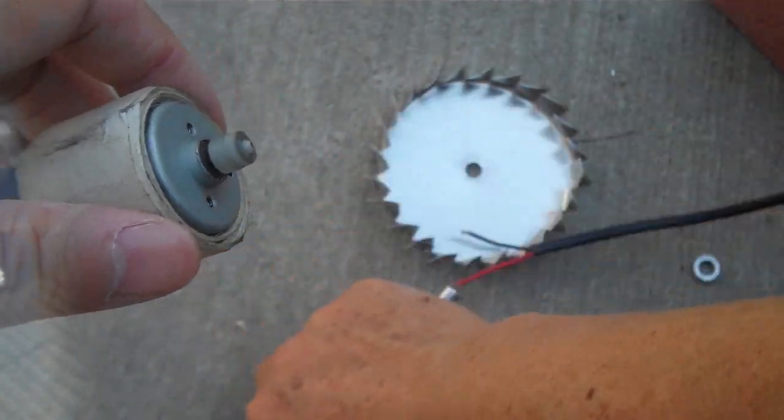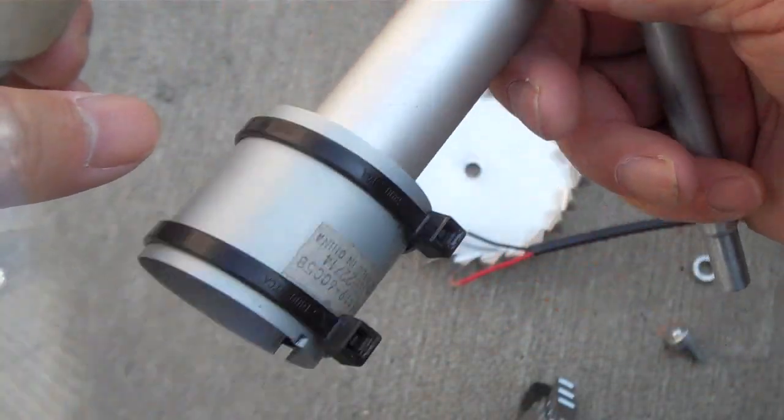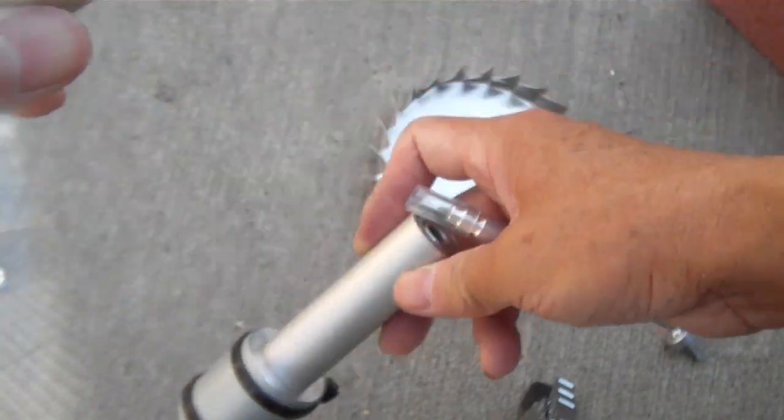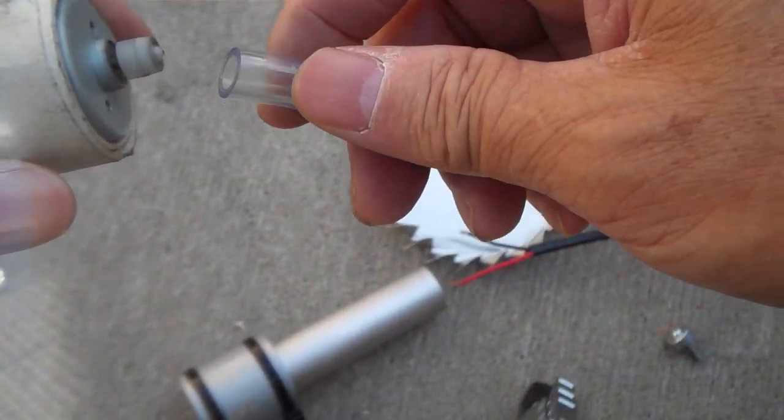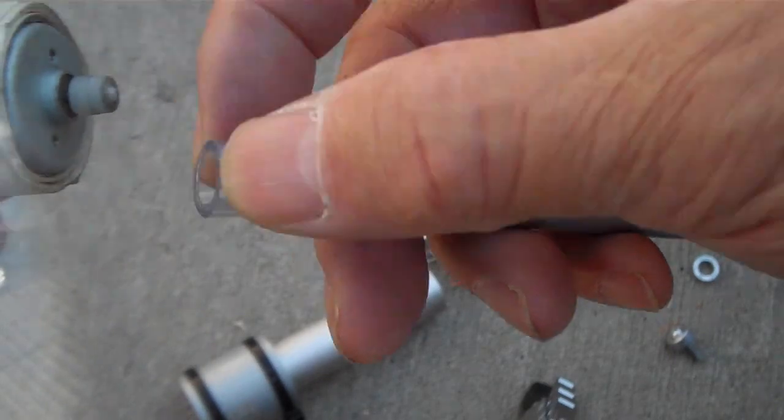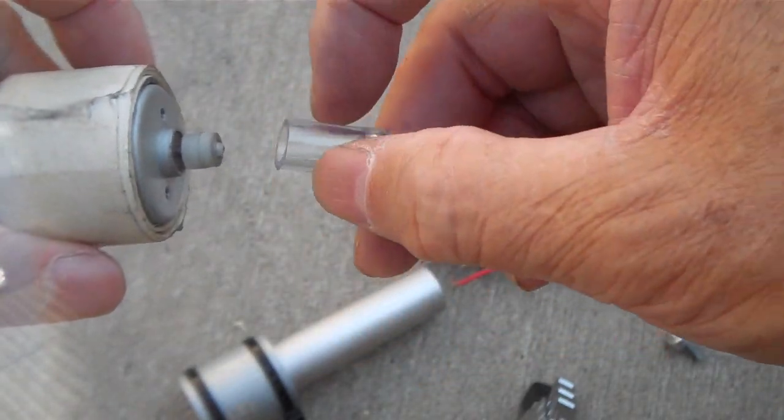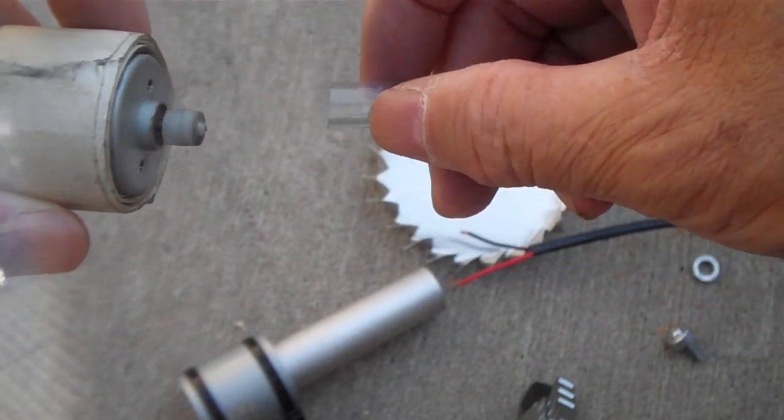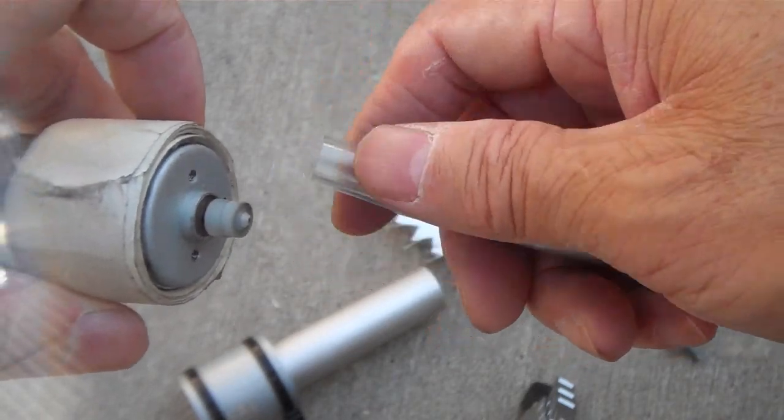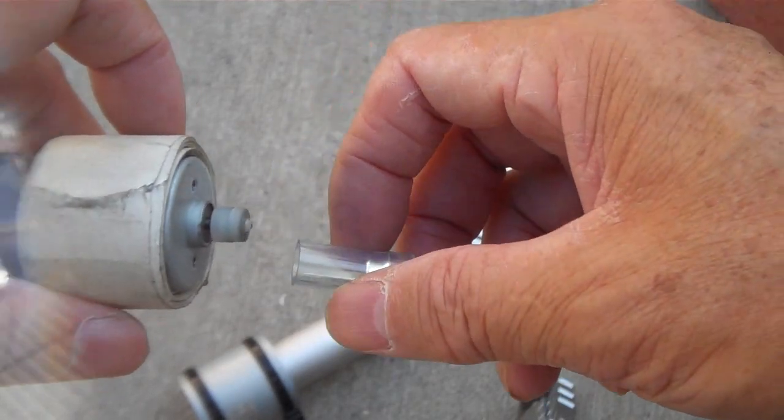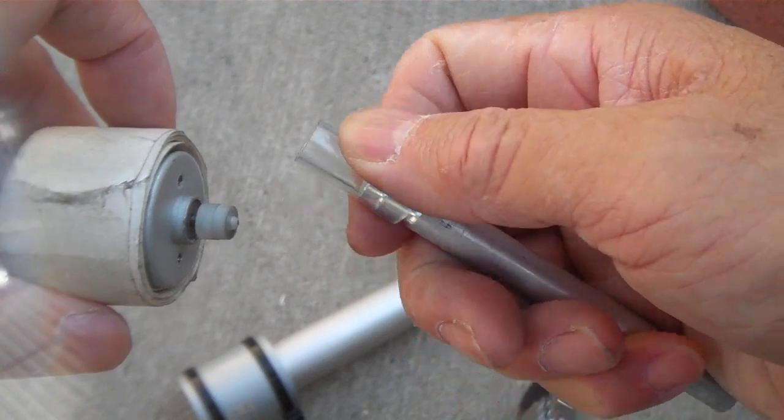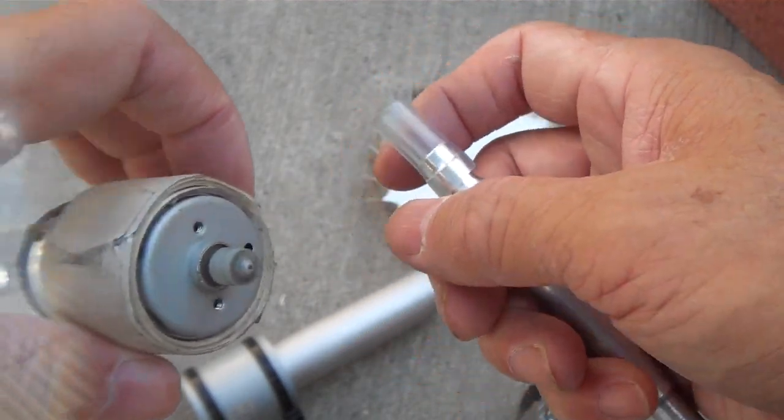Then I took the motor or the assembly apart and found out the problem was the plastic hose here was rubbing against the body of the motor. So it took a lot of torque to turn it. I took it apart to make sure everything is okay.